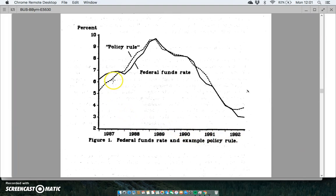When this particular rule did actually quite a good job—if we take the period 1987 to 1992, the early years of the Alan Greenspan Federal Reserve, the Taylor Rule, which we call here the policy rule, the broken line actually tracks the actual fed funds rate quite well.